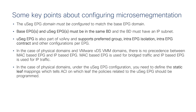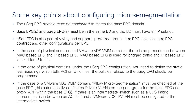For physical domains, remember to specify which leaf the configuration should be provisioned on using the static leaf setting. For VMware VDS domains, 'allow micro-segmentation' is the key setting that tells ACI to provision private VLANs on the port groups and configure proxy ARP on the leaf to answer ARP requests for other VMs. If you have intermediate switches between the virtualized host and the leaf, you must configure those VLANs as private VLANs on those switches to prevent them from switching traffic between VMs directly.